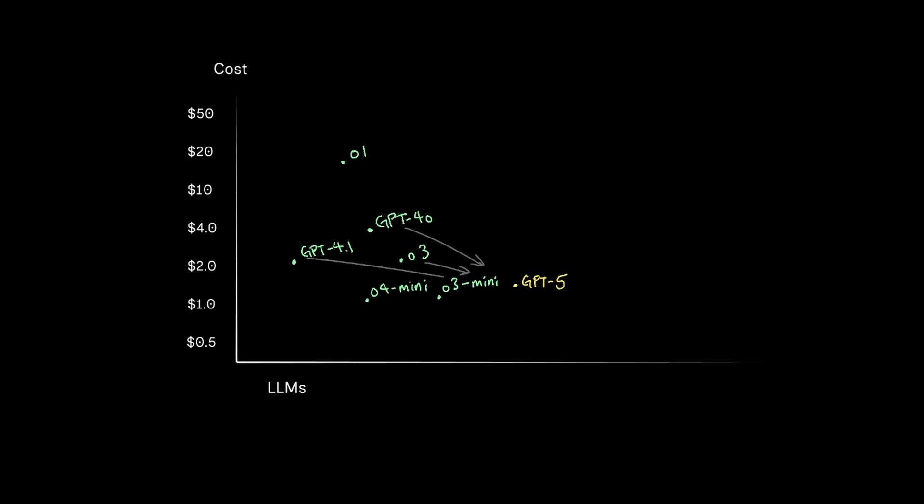If you look at the chart, OpenAI essentially consolidated their pricing to $1.25. In comparison, GPT-40 was $2.50, GPT-4.1 was $2, O3 was $2, and O4 Mini was $1.10.